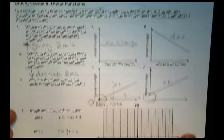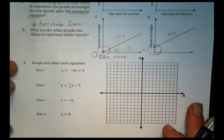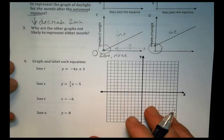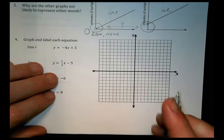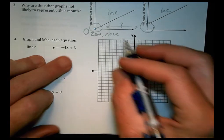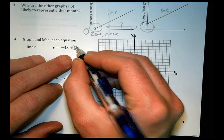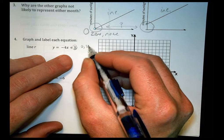Those are your questions for the first three. Let me move down to number four. Number four, we'll actually solve a little bit. It says graph and label each equation. So here we go, let's do this.